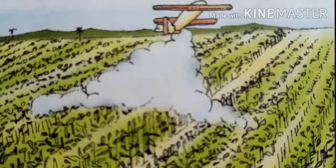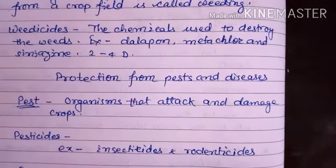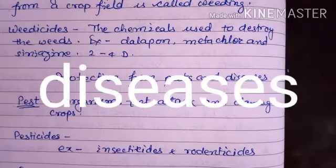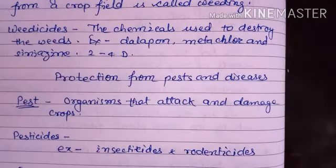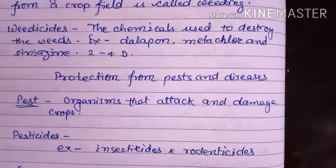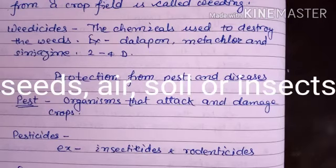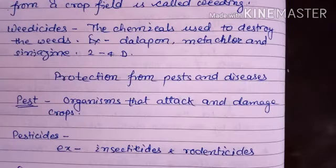Now, we will discuss how plants are also damaged by diseases. These diseases are caused by fungi, bacteria, or viruses. These diseases are transmitted through seeds, air, soil, or through insects.